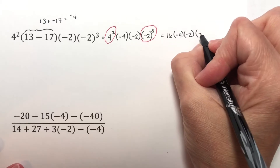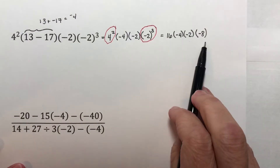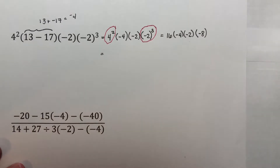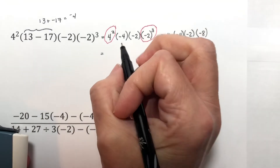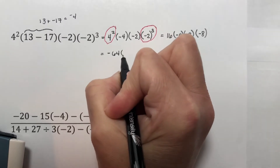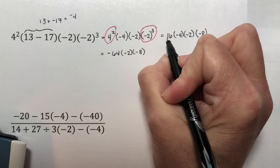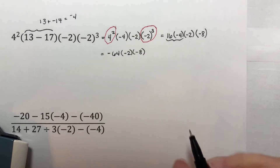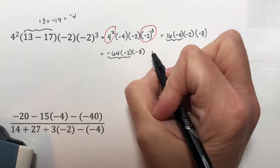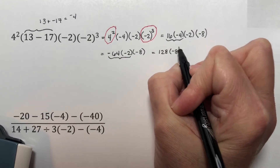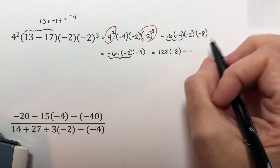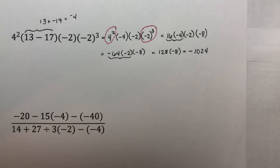Now all we have are multiplications, so we multiply straight across from left to right. 16 times negative 4 is going to be a negative number — 16 times 4 is 64 — so this is negative 64 times negative 2 times negative 8. Negative times a negative is positive: negative 64 times 2 is 128, so this is 128 times negative 8. Positive times a negative is negative, and you get 1024, so the answer is negative 1024.